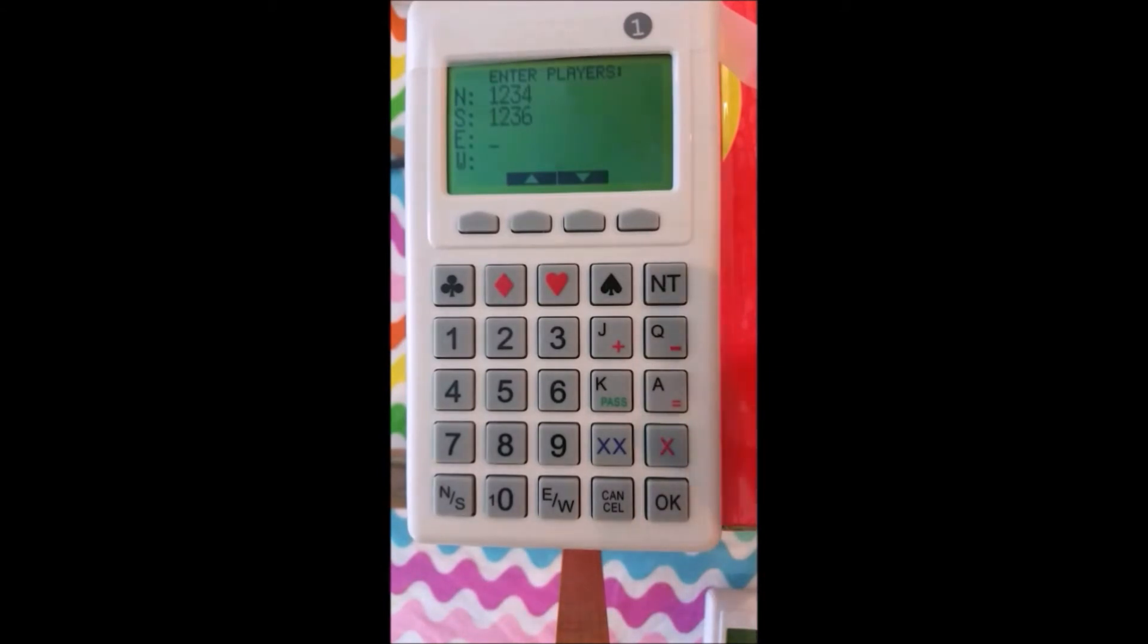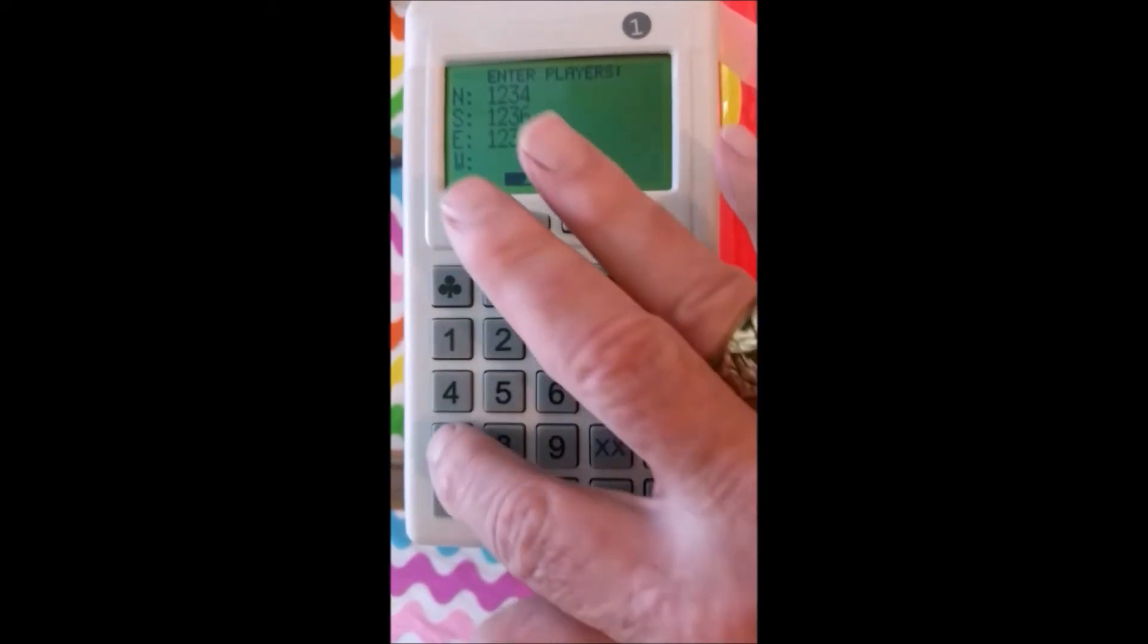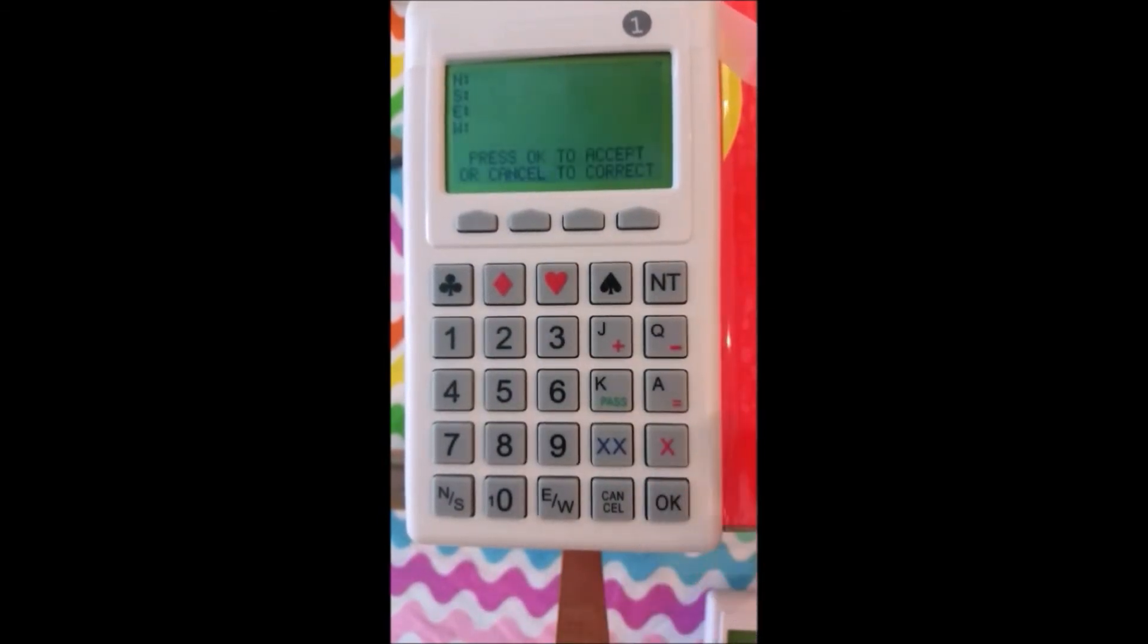Now it wants to know East, which is 1237. OK. And now it wants to know West, which is 1238.